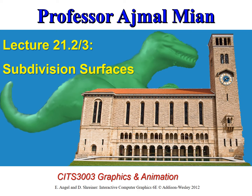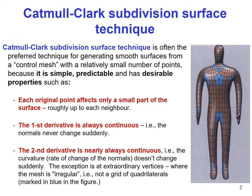In this lecture we study a particular subdivision surfaces method called Catmull-Clark subdivision surface technique, which is often the preferred technique for generating smooth surfaces from a control mesh with a relatively small number of points. It is simple, predictable, and has desirable properties — each original point affects only a small part of the surface, roughly up to its neighborhood, so we can move different parts of the surface in different directions very easily.